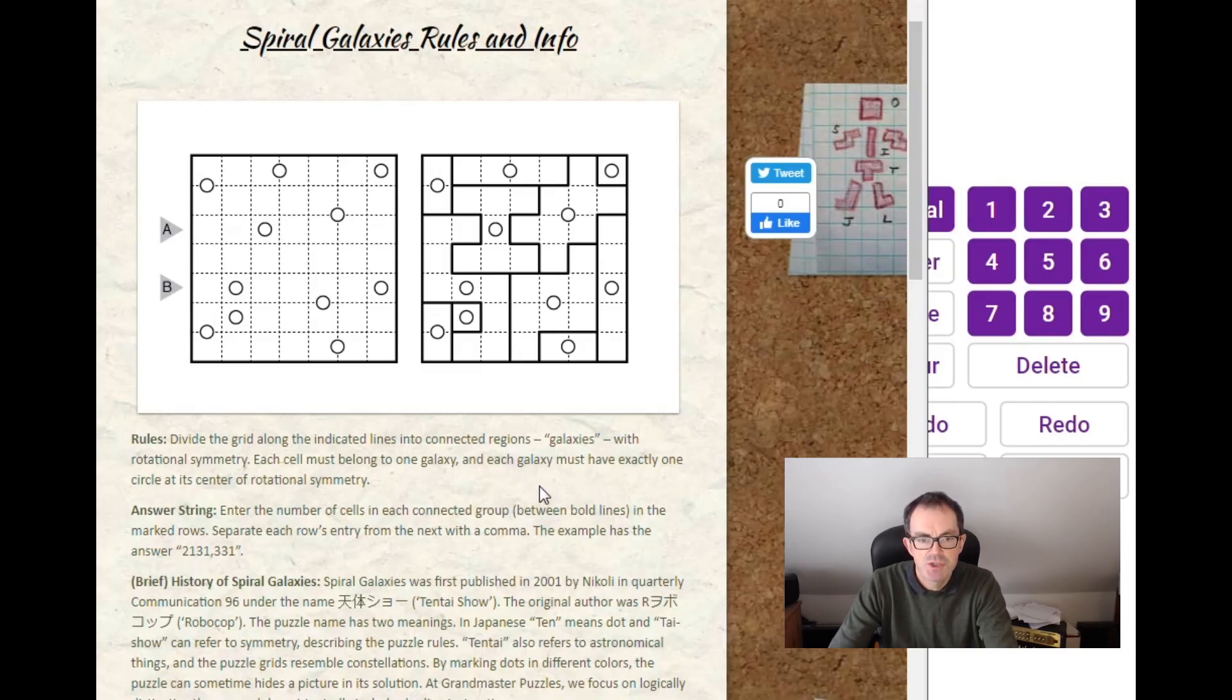Spiral Galaxies is a region division puzzle. We need to divide the grid into different areas. Perhaps the easiest way to understand the puzzle is to look at the example on the screen. You can see that each area that we divide the grid into has to have rotational symmetry around a dot. Each area must have exactly one dot, and that dot must be at the center of that region's rotational symmetry. If we flip the area around 180 degrees, we will get something that looks absolutely identical. That's all there is, which is the mark of a classic puzzle.